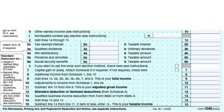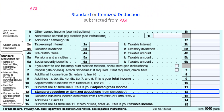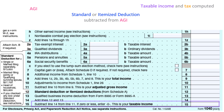Once income has been totaled and adjustments subtracted, the AGI is figured on line 11 of the 1040. The standard or itemized deduction on line 12 is subtracted from AGI. This decreases the amount of income subject to tax. Once that is subtracted out, you get the taxable income which is used to figure the tax.